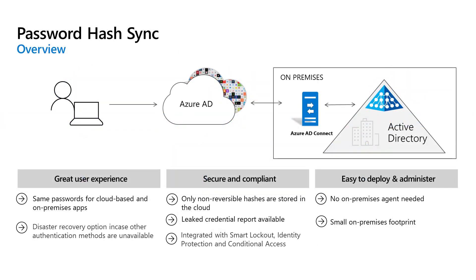I'm a fan of password hash sync because it's really simple. We're synchronizing a hash of the hash of the user's password from Windows Server Active Directory up to Azure Active Directory. This gives you single sign-on to your apps — third-party, Microsoft, and even on-premises web apps. It gives you a report to see user credentials that are up for sale on the dark web, access to conditional access, and no agents are required. It works really, really well.